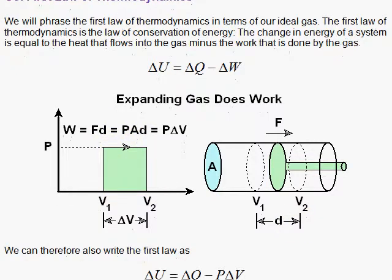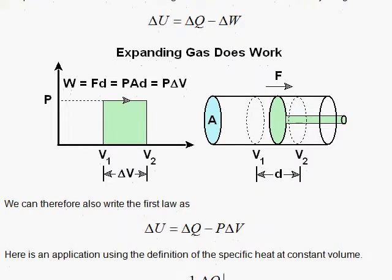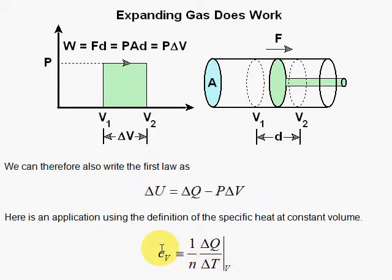Now we can write the change in energy as delta Q minus P dV, and we're going to apply this with a nice application using specific heats. The specific heat is a measure of how well a substance can absorb heat. You compare it with the temperature.